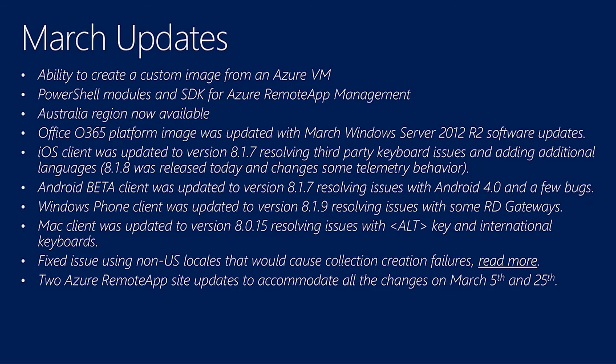Just in March alone, Microsoft added about 10 new core functions, including an Office 365 platform image updated with the latest server updates. The iOS client, Android client, and Windows Phone client have all been updated, and various patches and changes have been made to improve performance and overall experience.